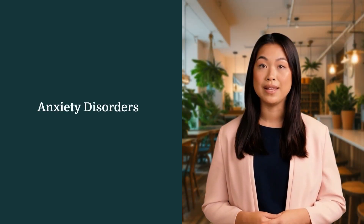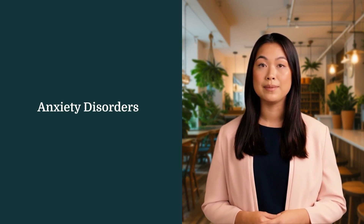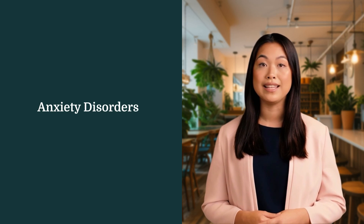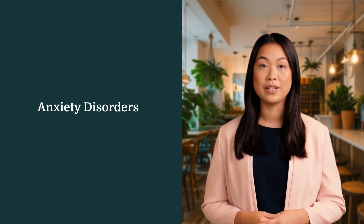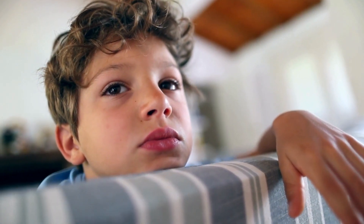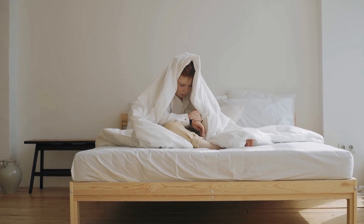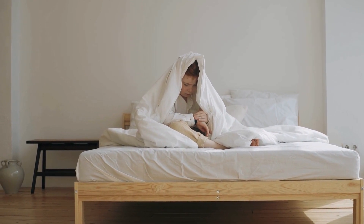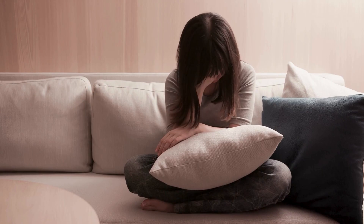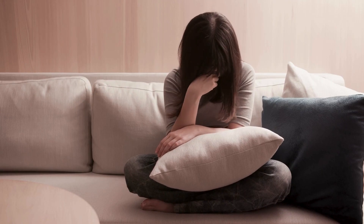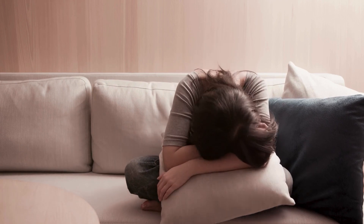Next, let's talk about anxiety, which is another condition that frequently coexists with autism. Children with autism may feel heightened anxiety in unfamiliar situations, social interactions, or when their routines change unexpectedly. This anxiety might manifest in ways that are unique to each child. For some, it's restlessness or irritability. For others, it could mean avoiding certain activities or experiencing meltdowns when they feel overwhelmed.